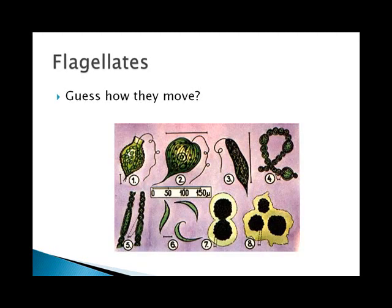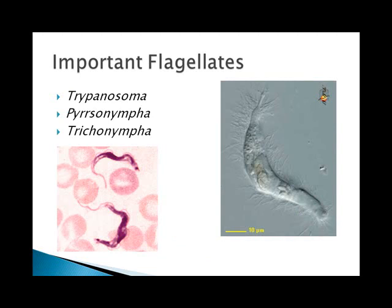Flagellates move with flagella, which are longer and whip-like instead of short and hair-like. Some important ones are Trypanosoma, which causes sleeping sickness; Parasonympha, which is found in the guts of some animals; and Trichonympha, which is found in the guts of termites and helps them digest cellulose.